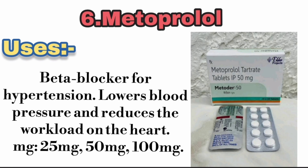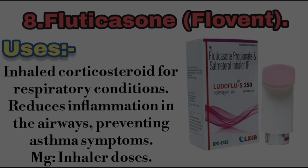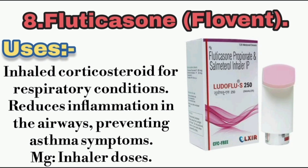6. Metoprolol — Use: Beta-blocker for hypertension. Lowers blood pressure and reduces the workload on the heart. Available mg: 25 mg, 50 mg, 100 mg.